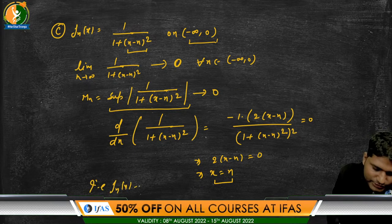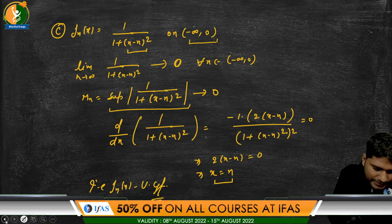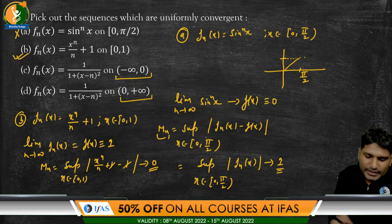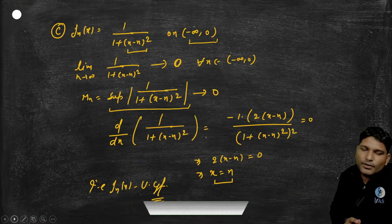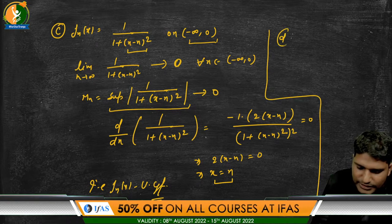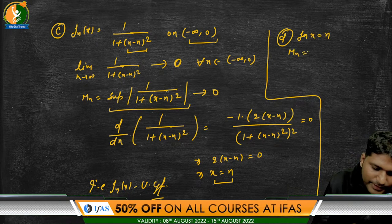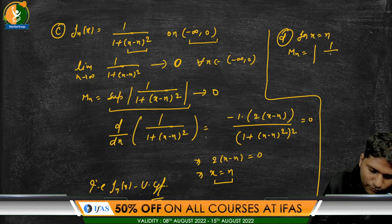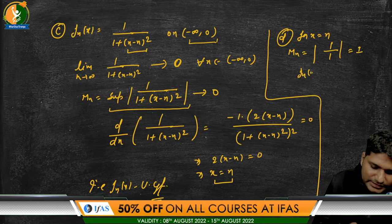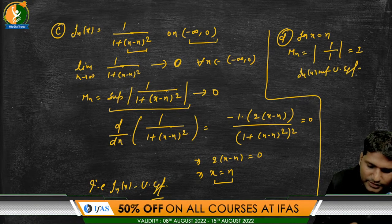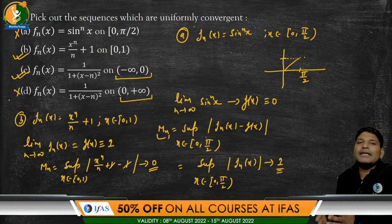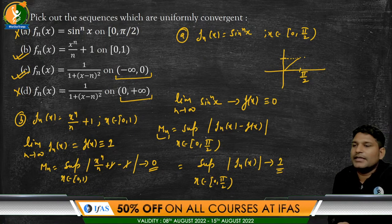For option D, f_n(x) = 1/(1+(x−n)²) on (0, +∞). Here x = n is in the domain. Substituting x = n gives M_n = 1/(1+0) = 1. Since M_n = 1 does not tend to 0, option D is not uniformly convergent on (0, +∞).